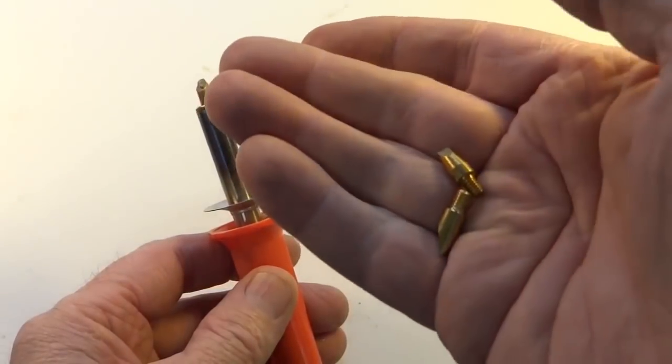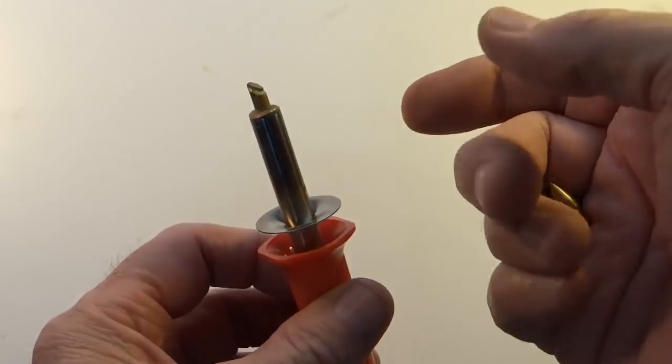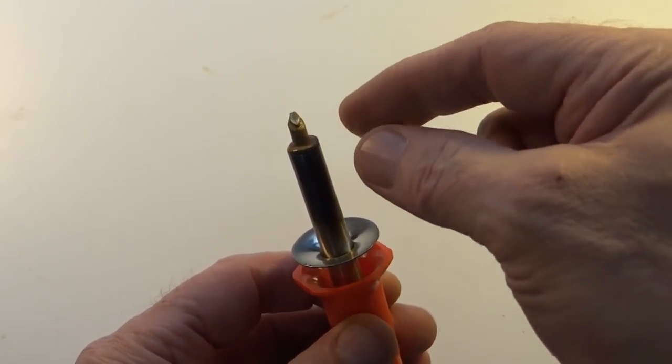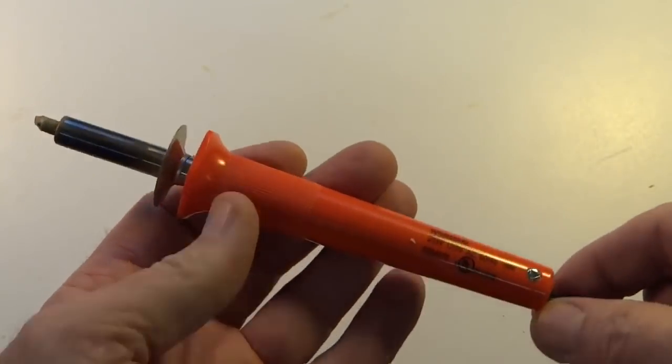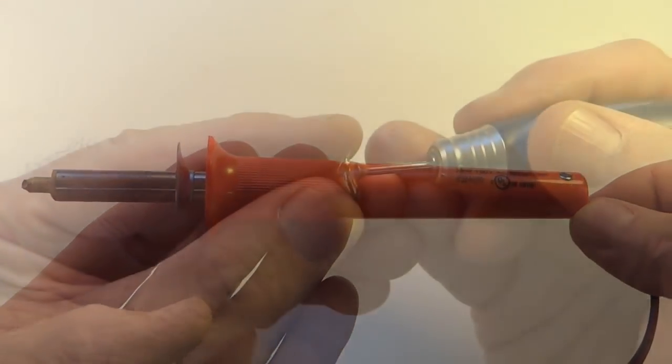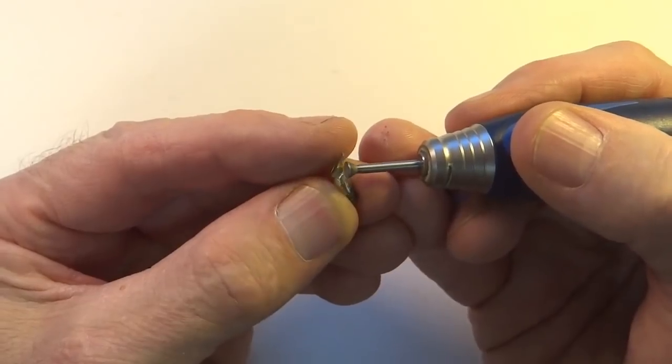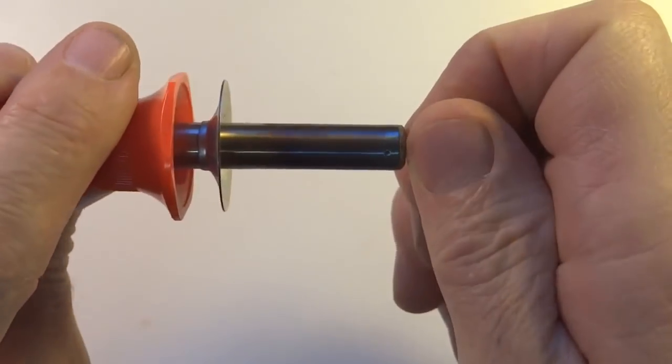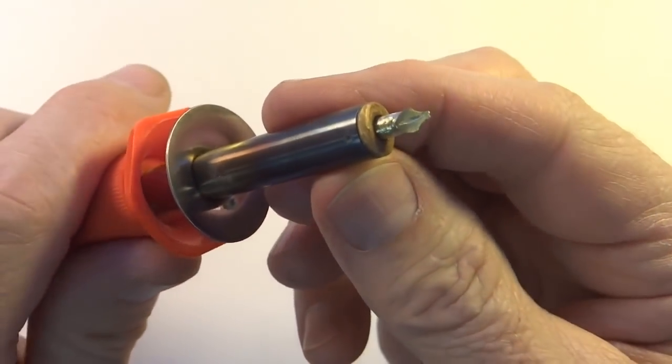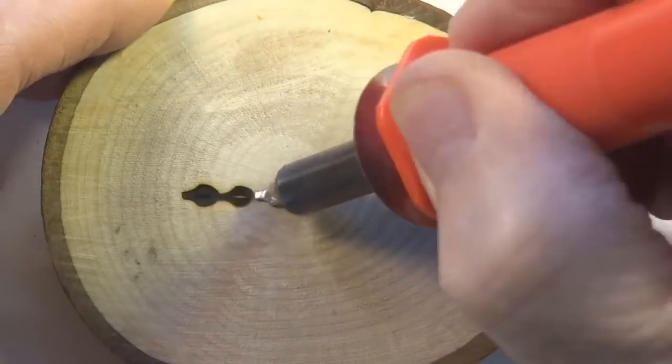When I first started carving rattlesnake walking sticks, I needed a cheap way to create the scale texture. I took my utility wood burner and modified the tip into a snake scale shape. It worked great but there was no way to control the temperature, and so sometimes it would get too hot.